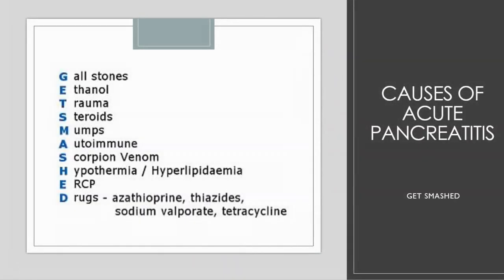The causes of acute pancreatitis are important, and we have a mnemonic for this: GET SMASHED. G is for gallstones, E is for ethanol or alcohol, T is for trauma, S is for steroids, M is for mumps virus, A is for autoimmune diseases, and S is for scorpion venom.